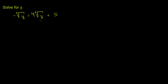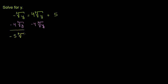If we want all of the radical onto the left-hand side of the equation, we can subtract 4 times the cube root of y from both sides of this equation. On the left-hand side, you already have negative 1 times the cube root of y, and then you subtract 4 more of the cube root of y, so you get negative 5 times the cube root of y. On the right-hand side, those terms cancel out, and you're just left with 5.